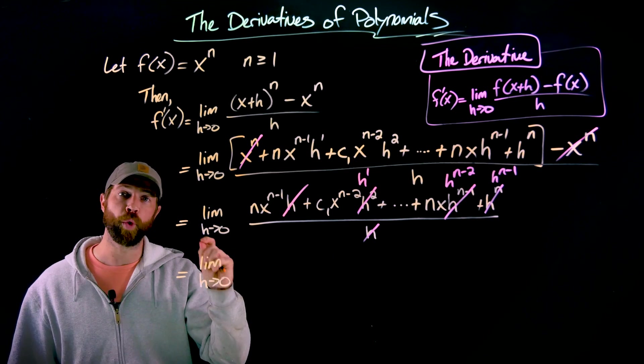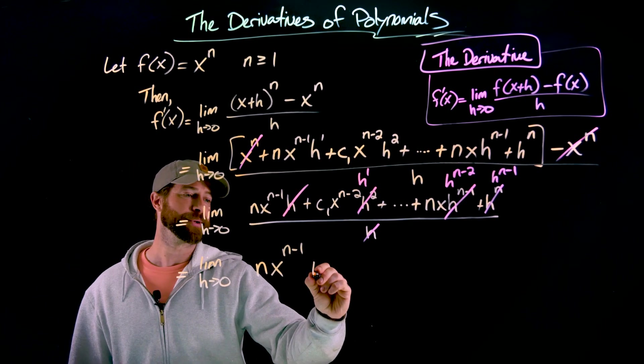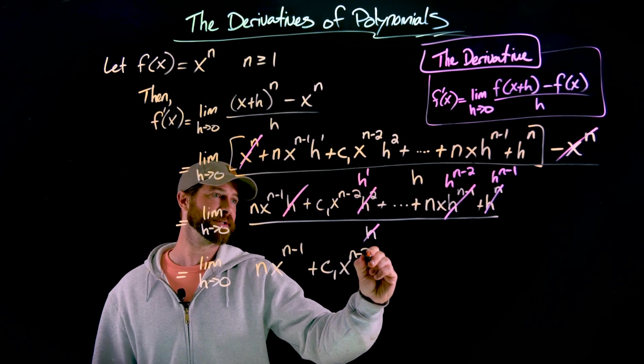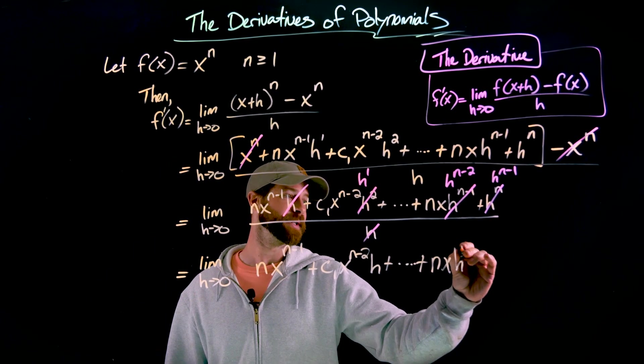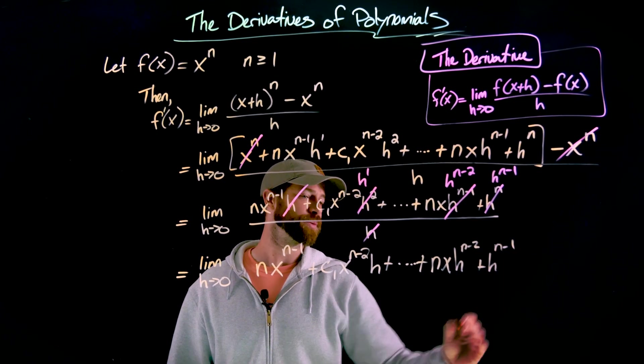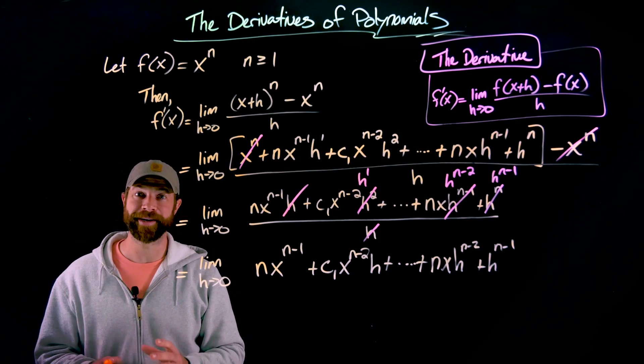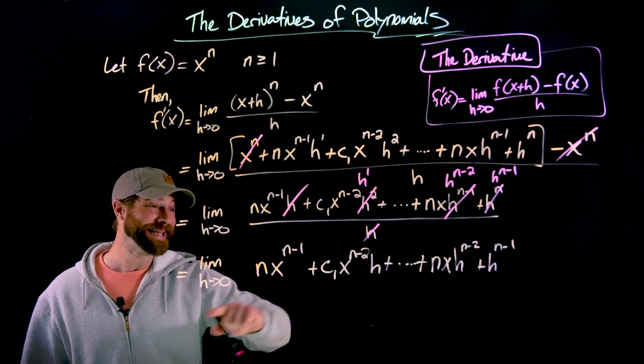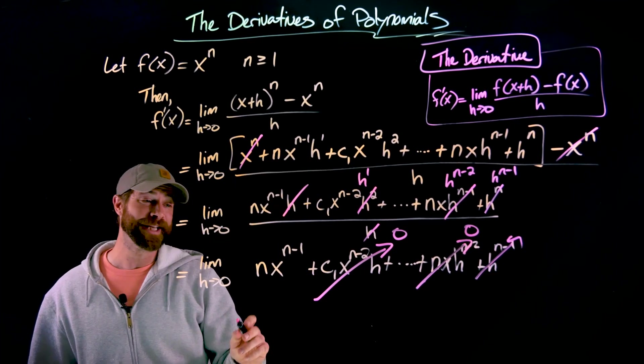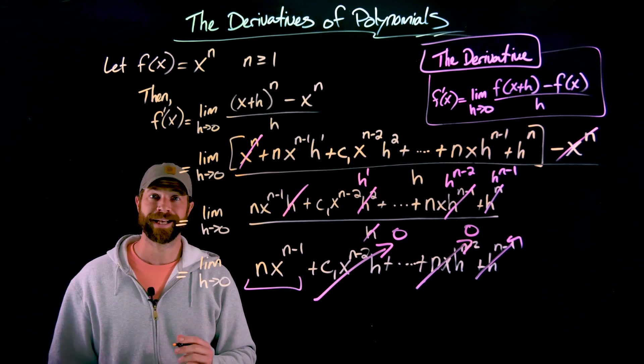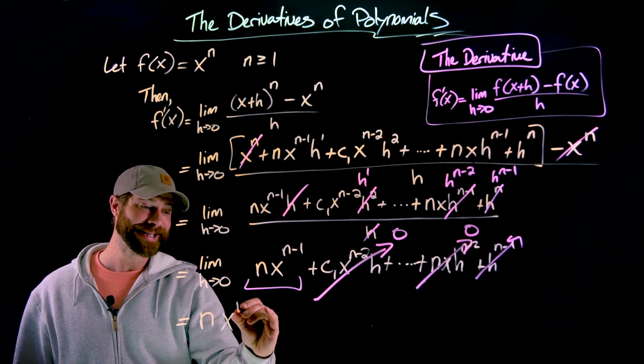After I cancel the h in the denominator with one h in each of the terms, I'm left with n times x to the n minus 1 in my first term plus some constant times x to the n minus 2 h plus a bunch of other terms that would have h's in them until I get n x to the h to the n minus 2 plus h to the n minus 1. And I'm no longer divided by h because it got cancelled in that last step. Now I have no issue with dividing by 0. I can plug in h equals 0 into each of these terms and all of these terms that now have h's in them all go to 0, leaving me with this term surviving, giving me a final answer of the derivative of x to the n equals n x to the n minus 1.